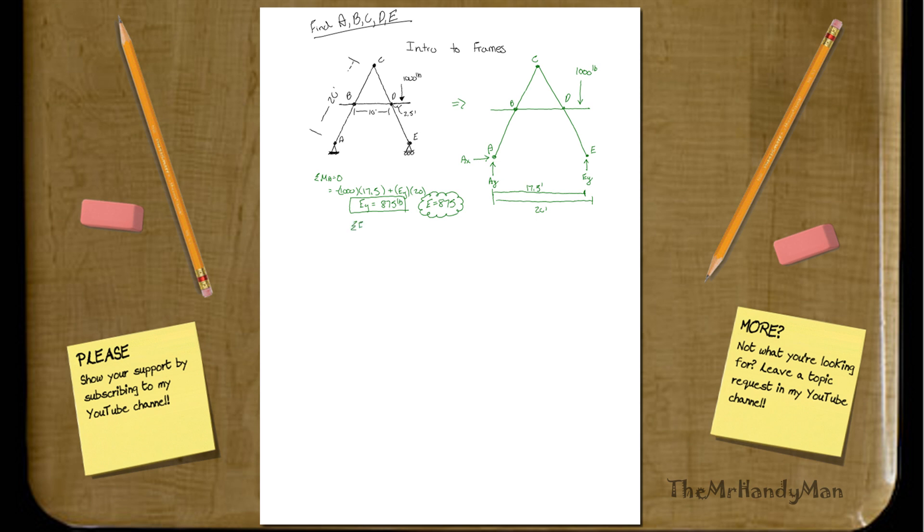Now, if we just look at some of the other things that we'll find, we'll find that F_Y will be A_Y plus E_Y minus 1,000 has to equal zero. Well, we know what E_Y is now, so this is going to be 875, obviously, so we can get A_Y is equal to 125 pounds.